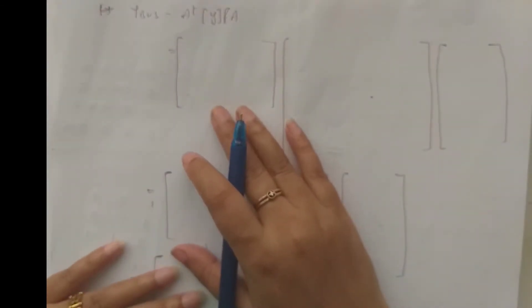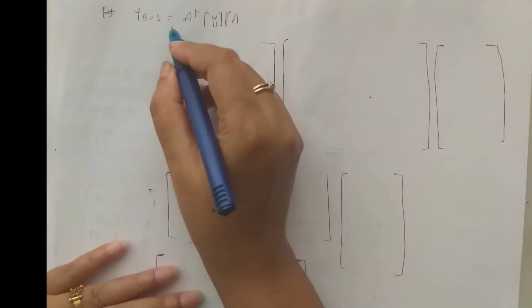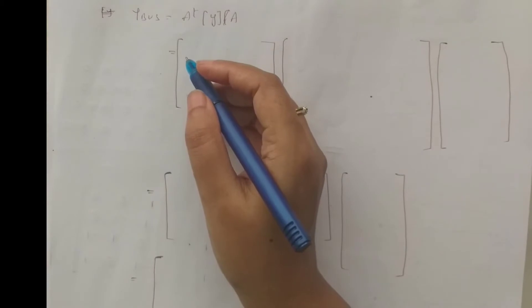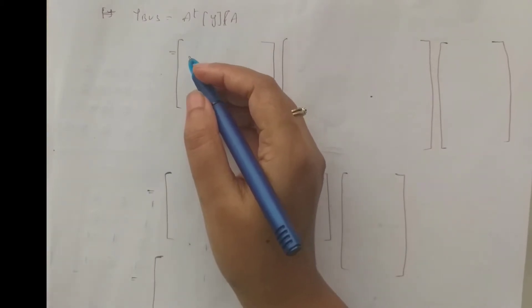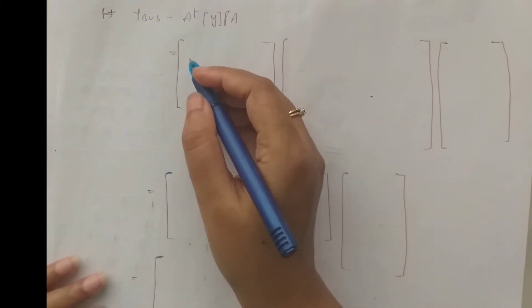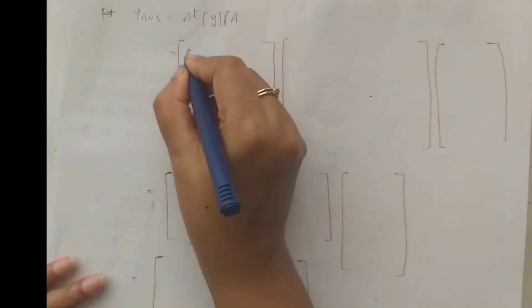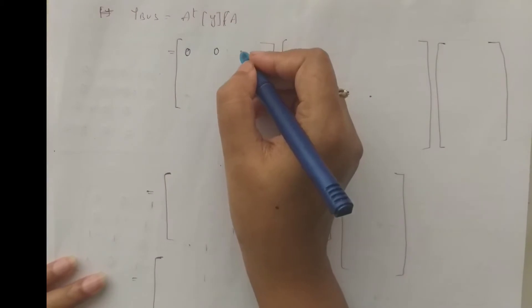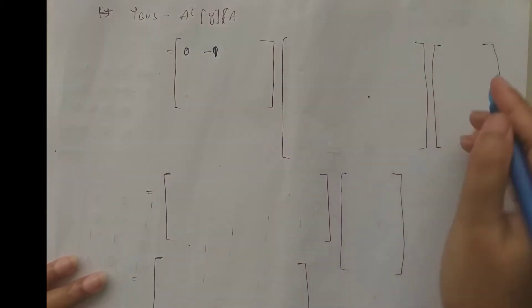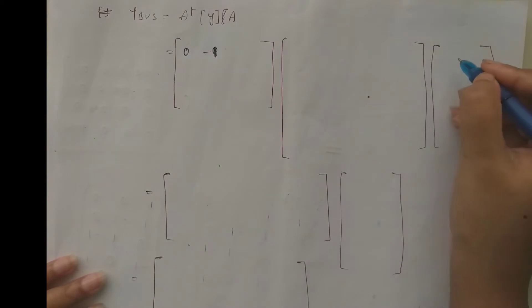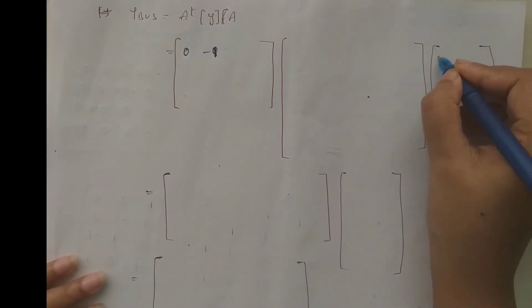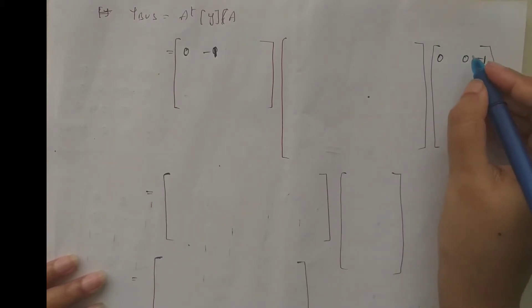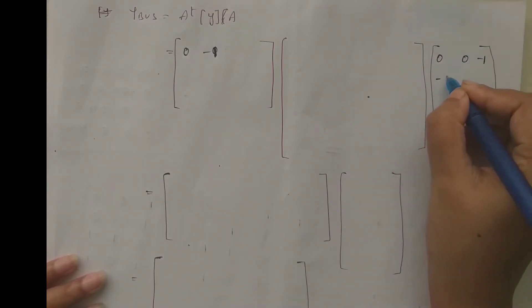Next, we form Y-bus = A^T * Y * A. So first we write matrix A transpose. A transpose is obtained by transposing matrix A.